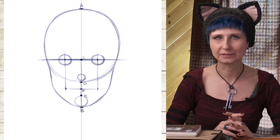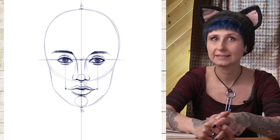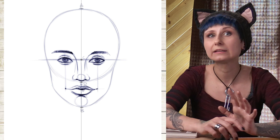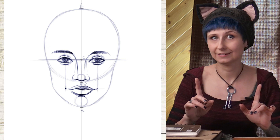Now we can start sketching the elements. Let's add some eyes, a nose, some eyebrows, some lips — always staying within our geometrical guidelines, but starting to add a little bit of character. We can decide how open or squinty the eyes are, how wide or narrow the nose is, how full or thin the lips are. But remember, no emotion yet. This is just the basic face structure study.